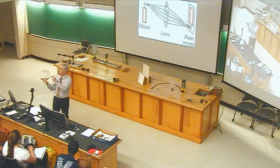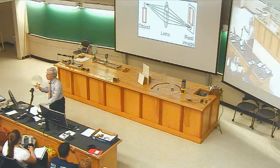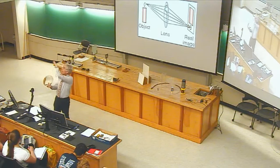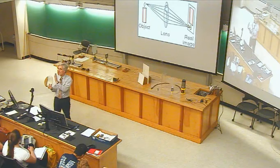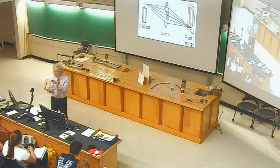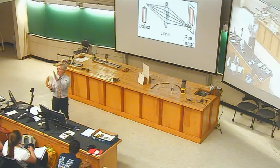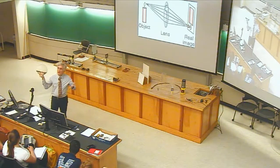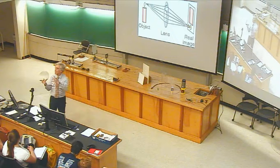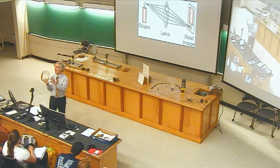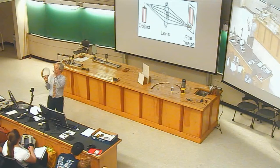This piece of glass has a spherical face on this side — it's part of a gigantic sphere, just sliced off. If I took two of these, we'd have it curved on both sides. There are subtle differences between a lens with curved surfaces on both sides and lenses that have curved surfaces only on one side.